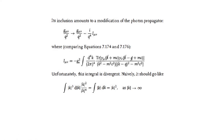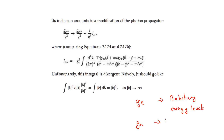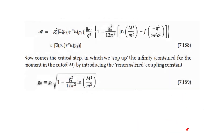What we do in renormalization is: we have this coupling constant G, which corresponds to arbitrary energy levels. We then rescale this coupling constant to a renormalized coupling constant, which is valid only up to some finite energy level — which we call the cutoff.